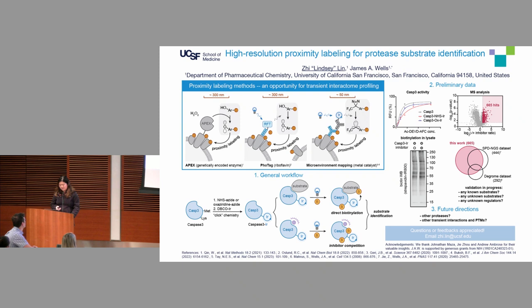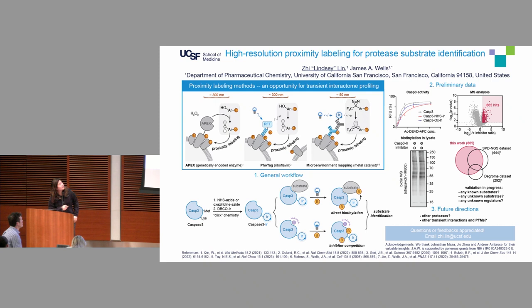Methods like immunoprecipitation or substrate phage display all require relatively stable complex formation during physical enrichment. That's why we want to turn to proximity labeling methods to capture transient yet functional interactions for proteases. Current enzymatic proximity labeling methods include APEX, BioID, and TurboID. More recently, microenvironment mapping methods use light to activate photocatalysts such as riboflavin or metal-based catalysts to transfer energy to a photoreactive probe, generating highly reactive species like carbene or phenol to label proteins in proximity.